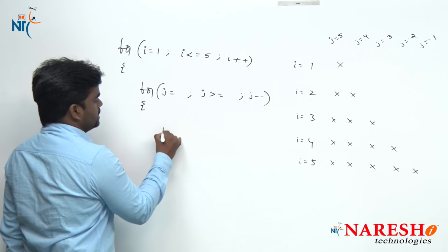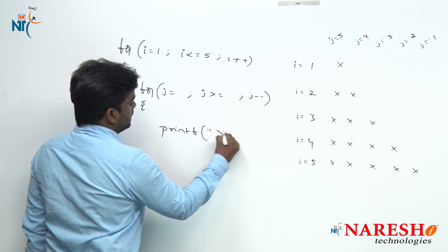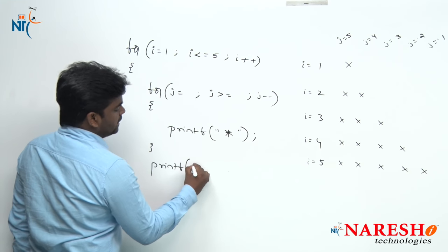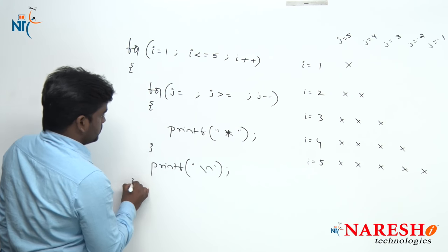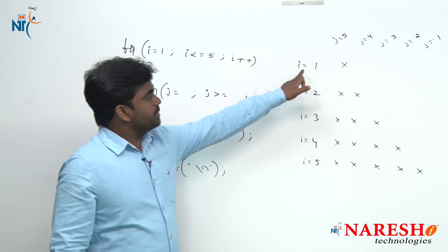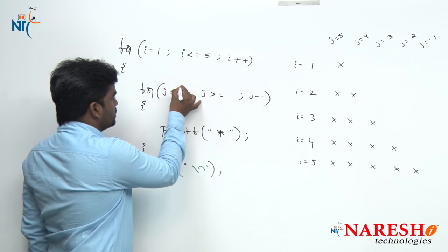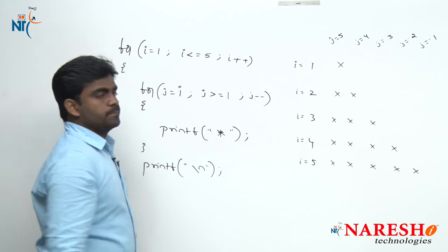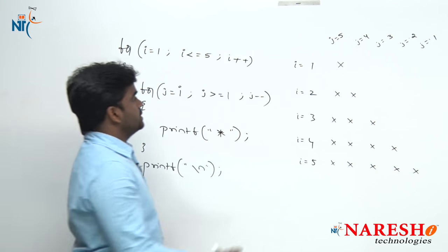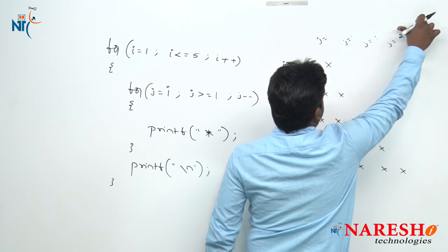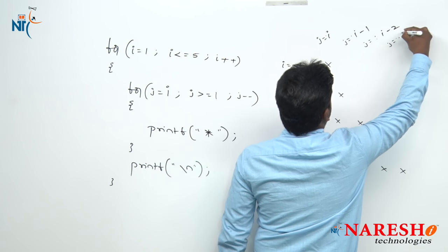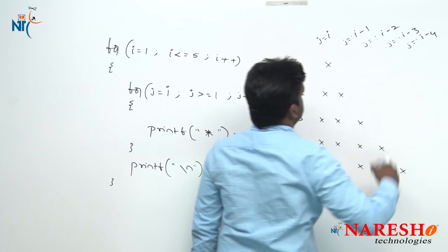Inside, the logic is the same — just printf printing star, and next printf slash n. Now what logic do we need to write? In the first case we need to print only one star. j value starts with i, j is greater than or equals to 1 — starts with i, j is greater than or equals to 1. j value starts with i, it is a decrement operator, so i minus 1, i minus 2, i minus 3, i minus 4 — those are the values.